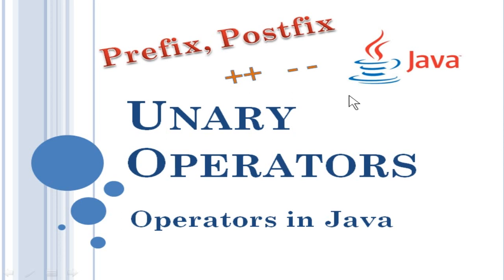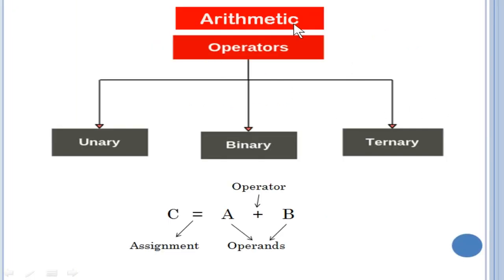Hello everyone. In this video we are going to see about unary operators. So what is an unary operator? An operator which operates with a single operand, we call it as unary operator. Before going to unary operators, we will see generally what are the arithmetic operators available. You have unary, binary, and ternary operators. Unary operator will operate with a single operand. Binary operator operates with two operands. And ternary operators operate with three operands.